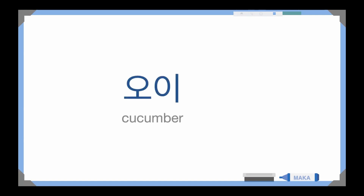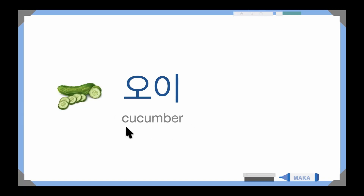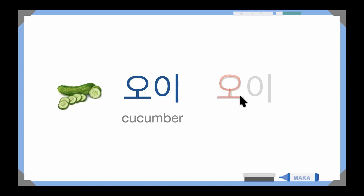And this word is 'oi', 'oi' — which means 'cucumber'. Yeah, cucumber! Do you like cucumber? I do. Okay, let's write the word 'oi': make a circle first, then the vowel, then the bottom 'o' and 'e'. Okay, like this — so this word is 'oi', 'oi'. Did you write this word too?